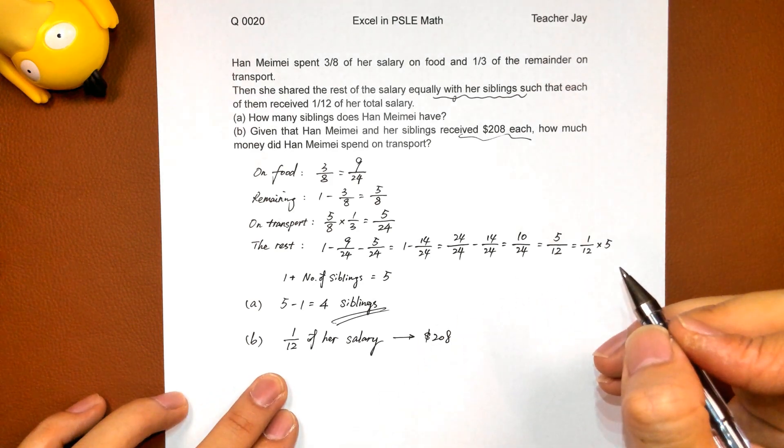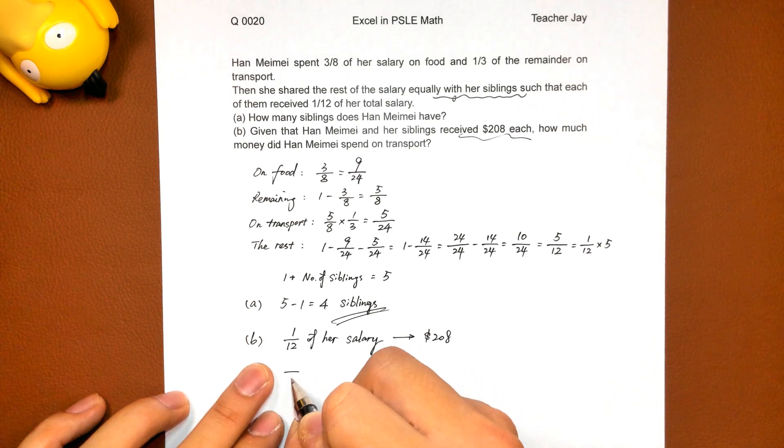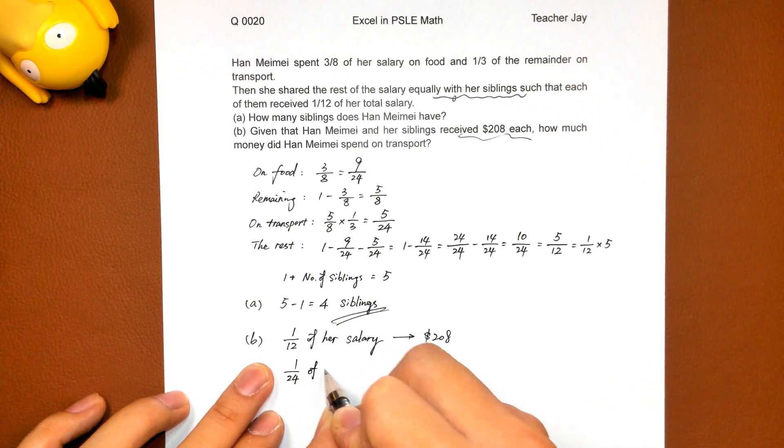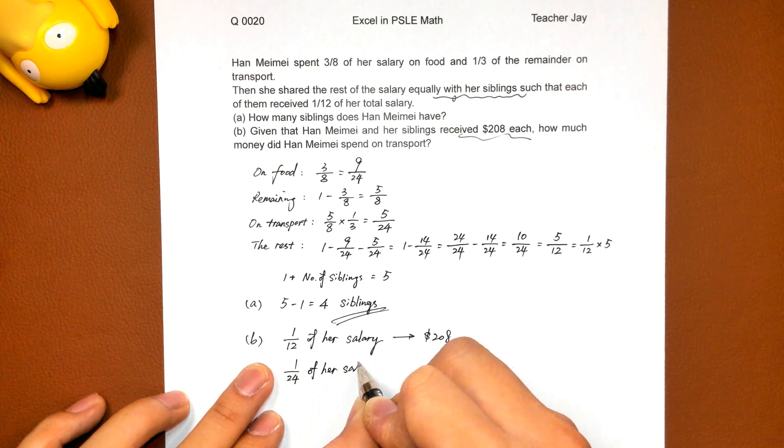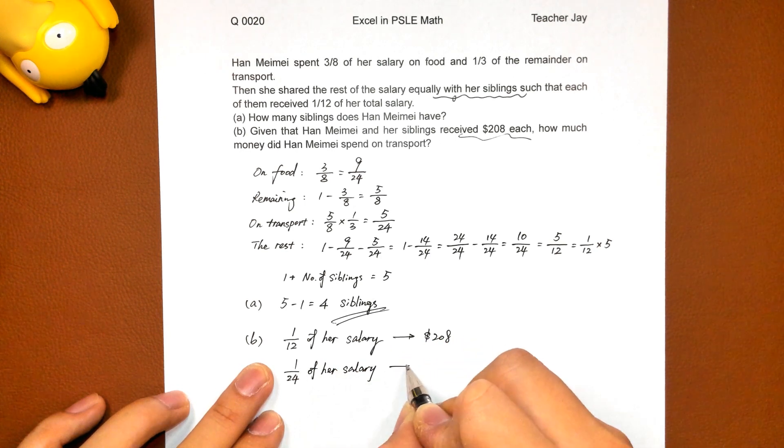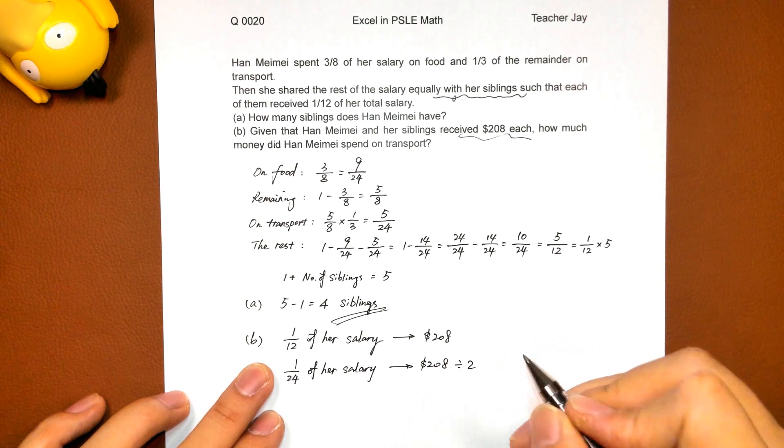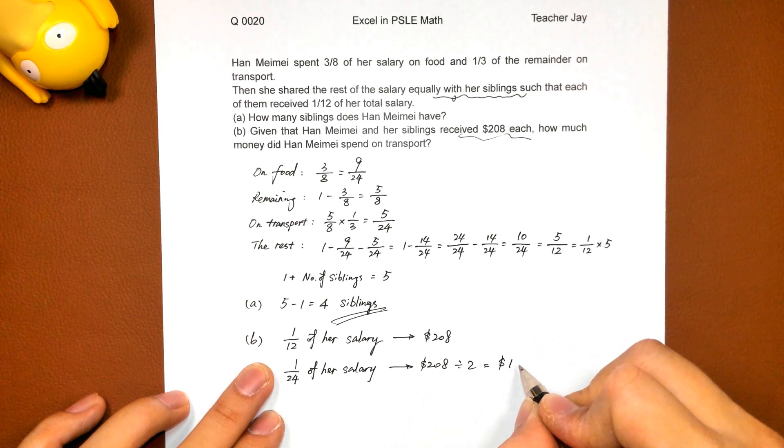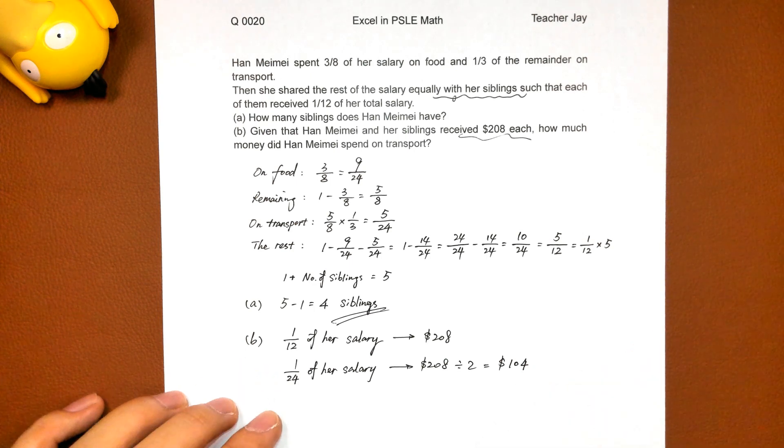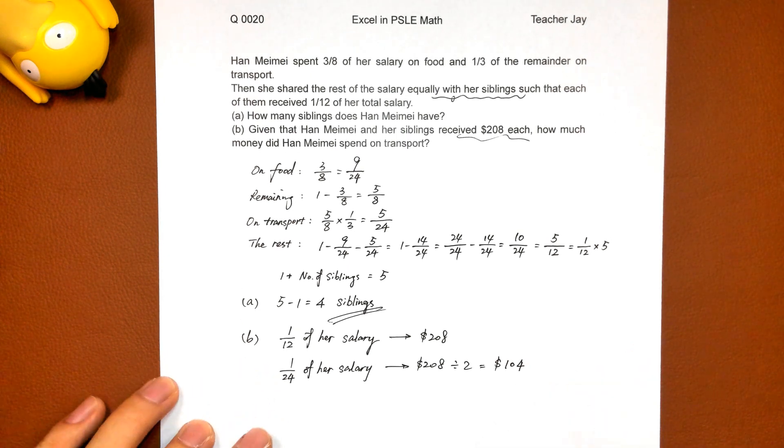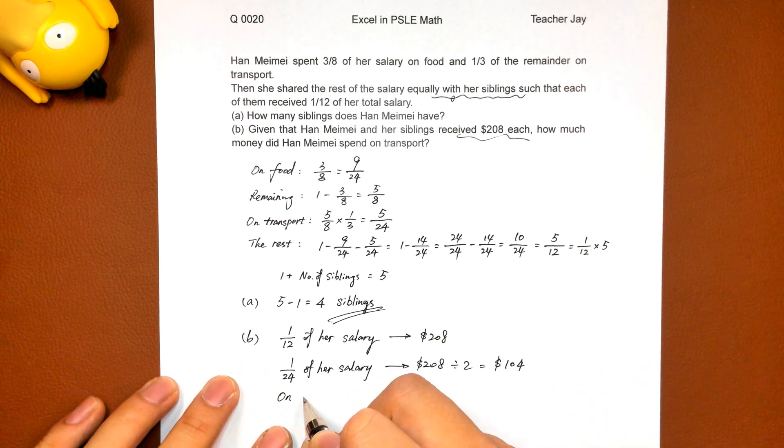One over twenty four of her salary will be two hundred eight divided by two, one hundred and four dollars. And the question is on transport, spend how much.